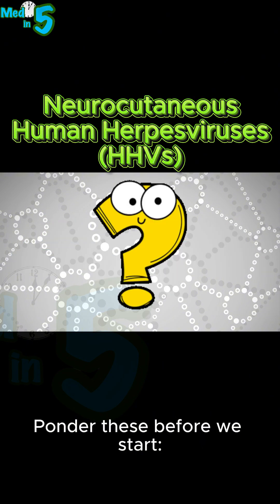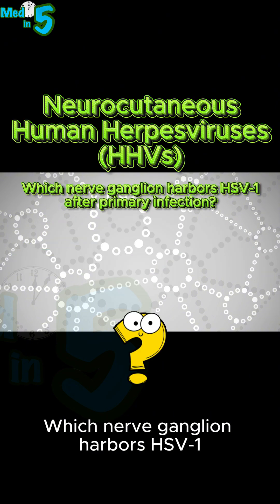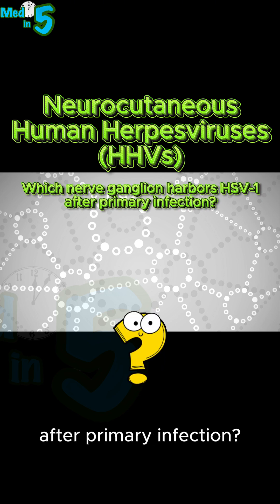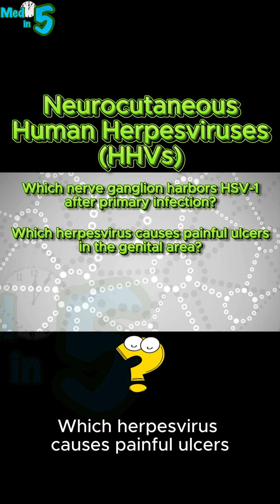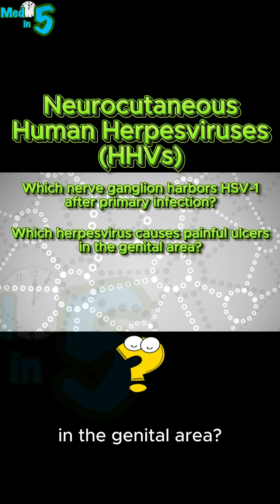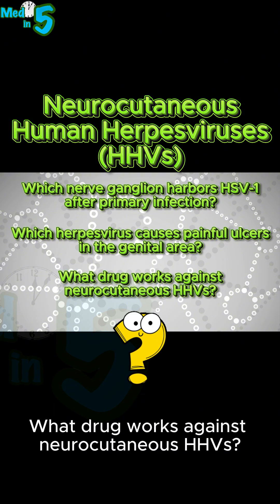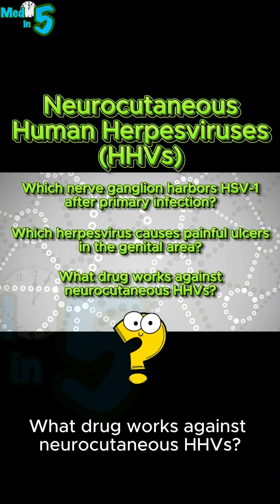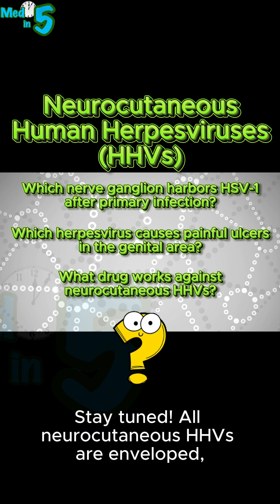Ponder these before we start. Which nerve ganglion harbors HSV-1 after primary infection? Which herpes virus causes painful ulcers in the genital area? What drug works against neurocutaneous HHVs? Stay tuned.